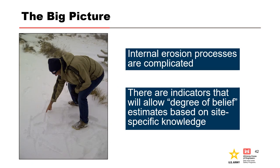In summary, Terzaghi said the mechanics of piping defy theoretical approach. Internal erosion processes are complicated, and those involved in team elicitation should be ready to explore every clue available to guide their judgment. It is essential to use the proper balance of engineering judgment and calculations when estimating probabilities, and to understand and build the case for what most influences the estimate and why. There are indicators that will allow degree-of-belief estimates based on site-specific knowledge. All final probabilities are estimated using team elicitation procedures based upon the totality and strength of the evidence.